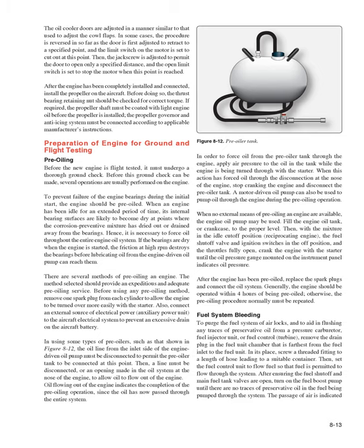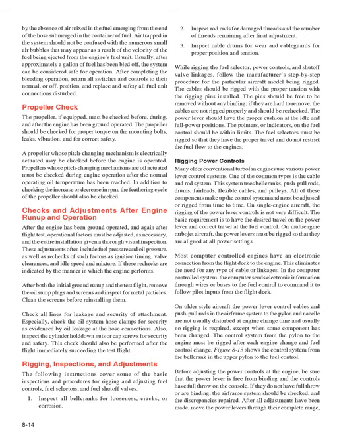Fuel system bleeding: to purge the fuel system of airlocks and to flush any traces of preservative oil from a pressure carburetor, fuel injector unit, or fuel control, remove the drain plug in the fuel unit chamber farthest from the fuel inlet and screw a threaded fitting with a hose leading to a suitable container in its place. Set the fuel control unit to flow fuel, ensure the fuel shutoff and main fuel tank valves are open, then turn on the fuel boost pump until there are no traces of preservative oil in the fuel. After approximately a gallon of fuel has been bled off, the system can be considered safe for operation. After completing the bleeding operation, return all switches and controls to their normal or off position, and replace and safety all fuel unit connections disturbed.